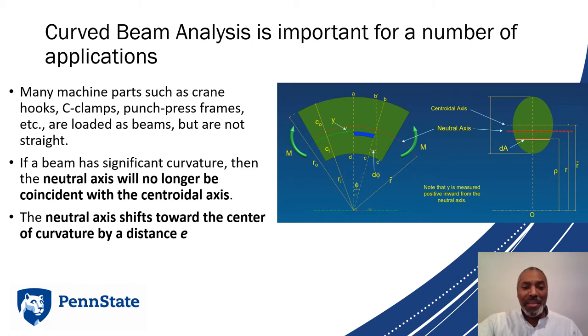Now if the beam has significant curvature, then the neutral axis will no longer be coincident with the centroidal axis. We can have some neutral axis which is lining up here, and that neutral axis then can differ from our centroid. For an elliptical cross section the centroid is going to be right through the middle, because the ellipse is symmetric, but the more curvature we have, that neutral axis gets shifted down.